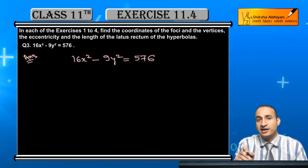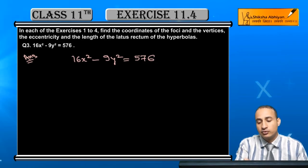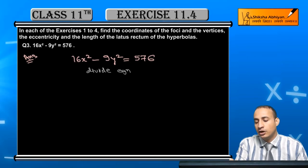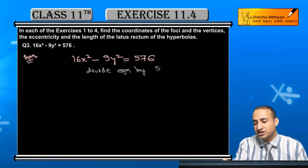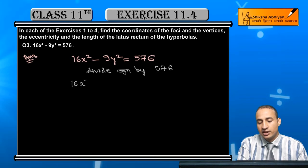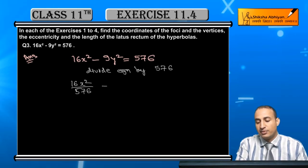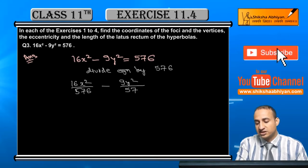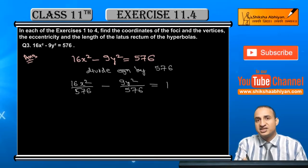Now what do we need to do here? We need to divide equation by 576. So in this case, x² upon 576 - 9y² upon 576 equal to 1. So what do we need to do with 16? We divide 576.